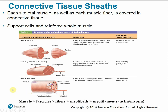Looking at the structural organization of skeletal muscle from largest to smallest: muscle is composed of fascicles, fascicles are composed of fibers, fibers are composed of myofibrils, and myofibrils are composed of myofilaments.